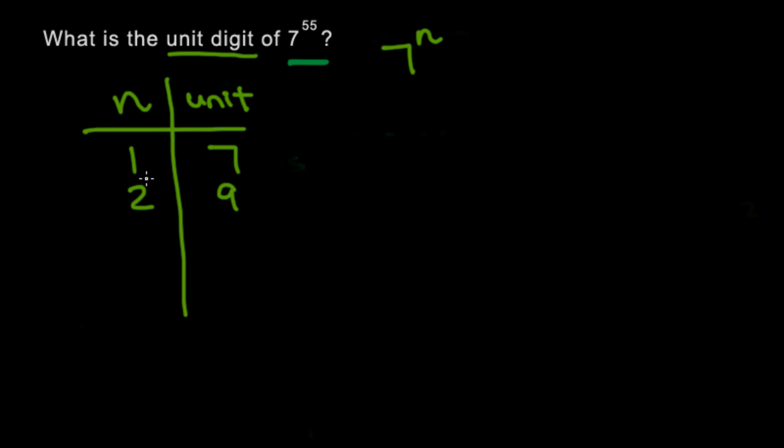And let's keep going. 7 to the power of 3 is 243, so the unit is just going to be 3. And 4, it's simply just going to be 3 times 7, which ends in 1.